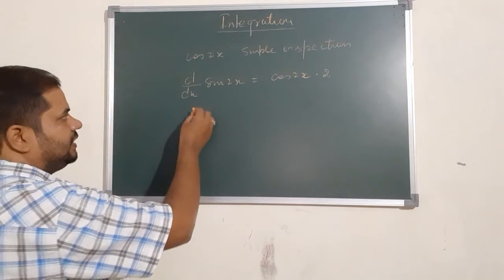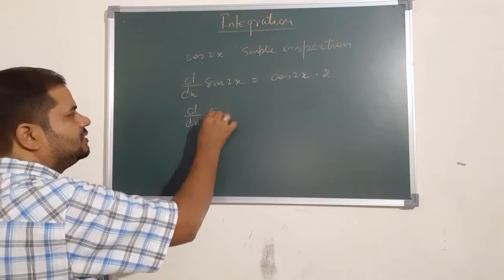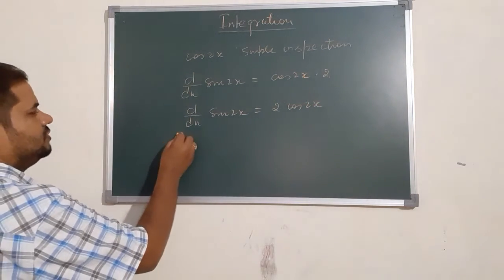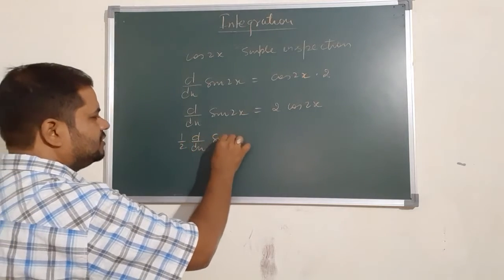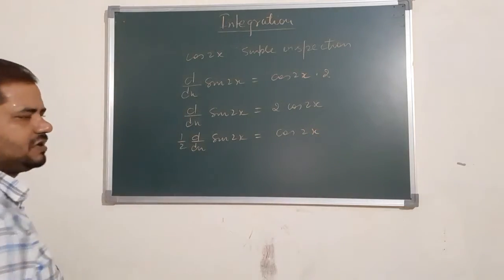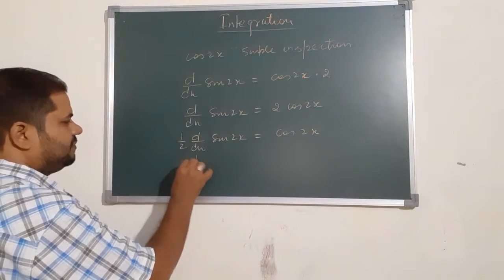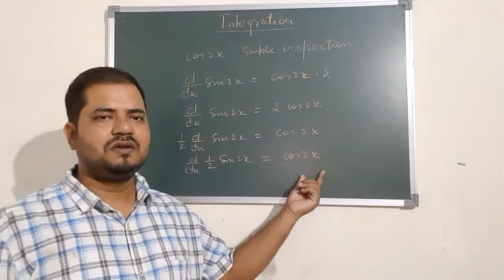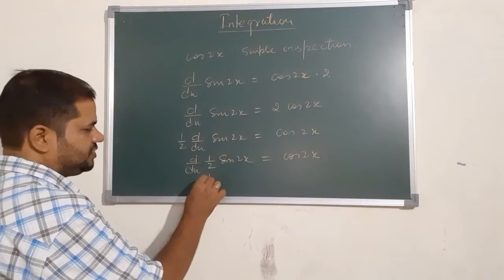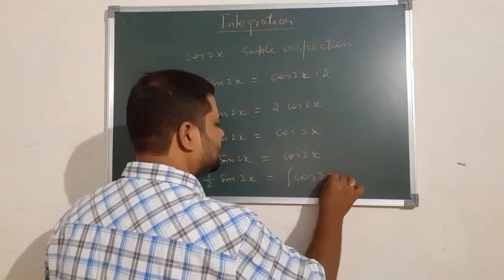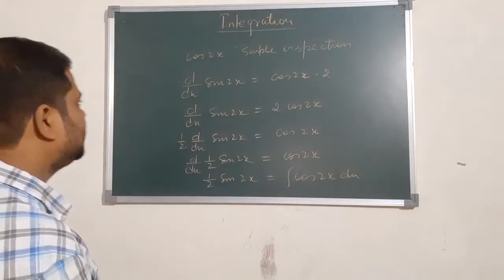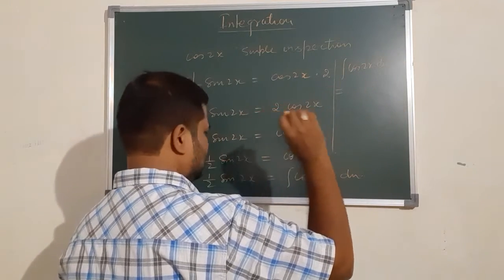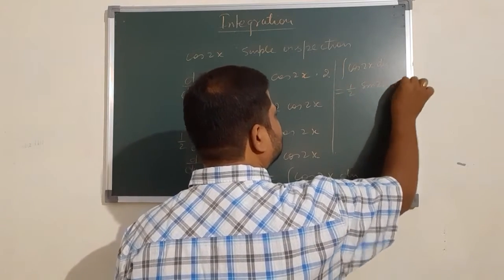Derivative of sin(2x) is 2·cos(2x). Dividing both sides by 2: (1/2)·d/dx of sin(2x) = cos(2x). Since 1/2 is a constant, we write d/dx of (1/2)·sin(2x) = cos(2x). So the anti-derivative — that is, the integration — gives us: integral of cos(2x) dx = (1/2)·sin(2x) + c.